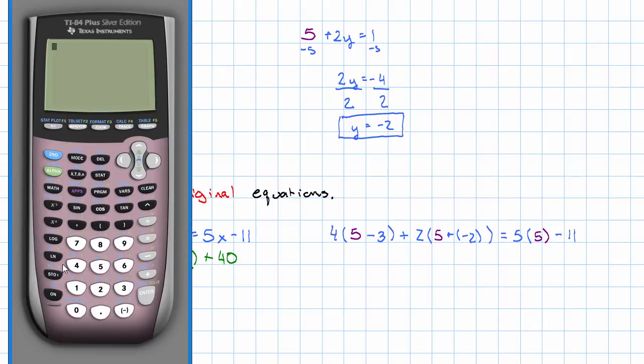This is something that probably we want to just put into the calculator. So, 4 times 5 minus 3 plus 2 times 5 plus negative 2, that works out to 14. 5 times 5 minus 11, that also works out to 14.